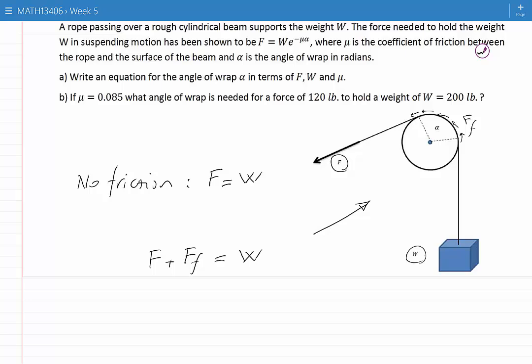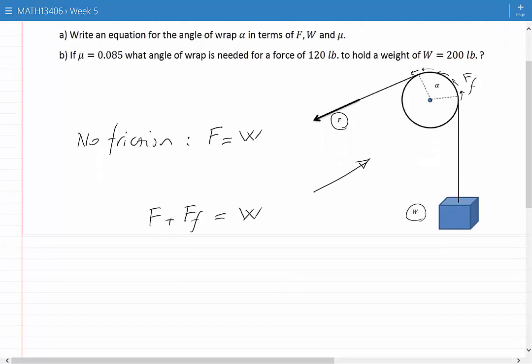It's called suspending motion equilibrium because the system is about to move and accelerate from its current position. As we can see from this equation and considering that the force of friction is positive, we can see that F, which is the force needed to hold the weight W, is less than W when we have this suspending motion equilibrium.